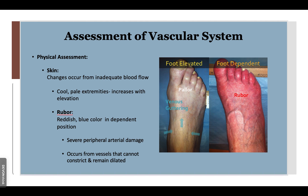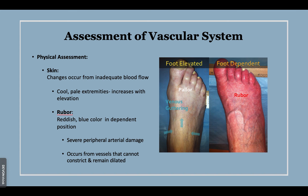One finding we didn't discuss is the comparison between pallor and rubor. Rubor is a reddish-blue color in the dependent position — that's what the foot looks like when it's down. This kind of rubor is present when there's severe peripheral arterial damage. It occurs because vessels cannot constrict, they stay dilated, and blood gets stuck there.